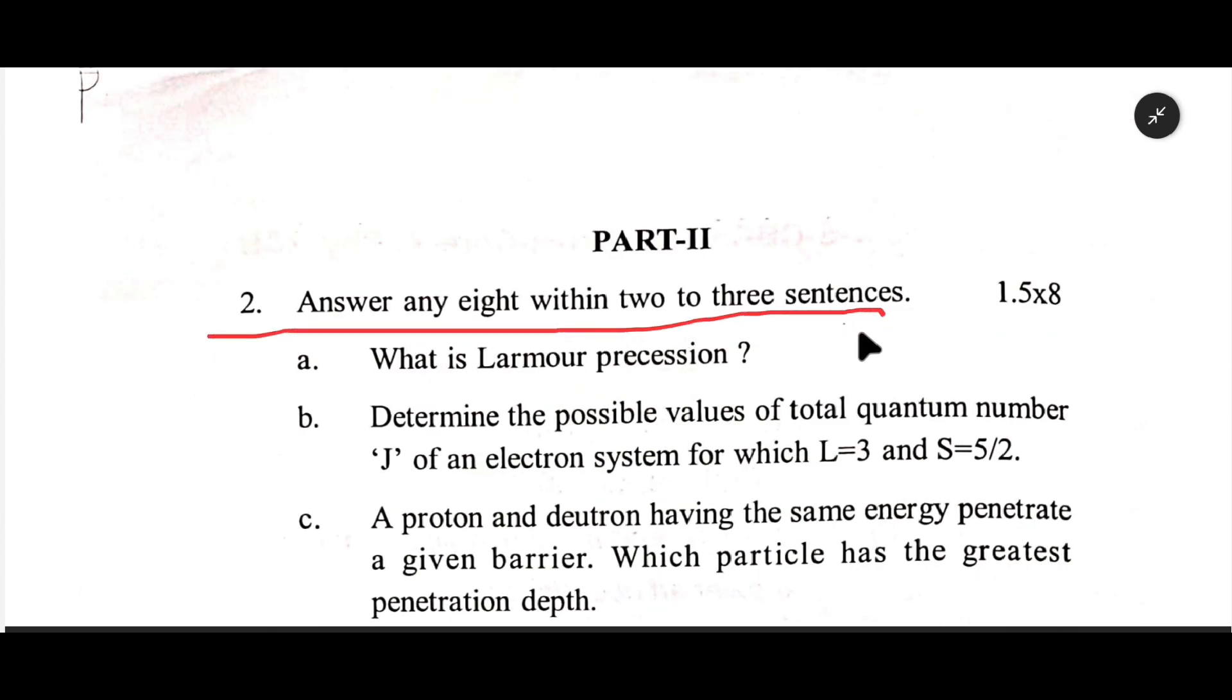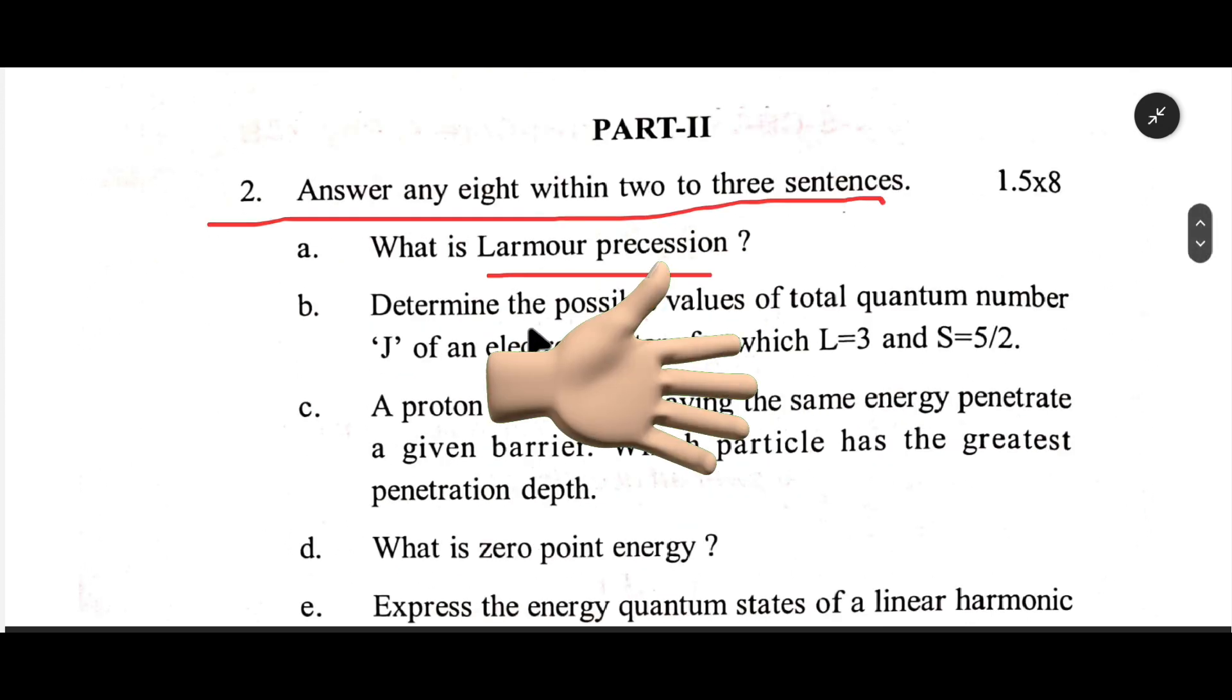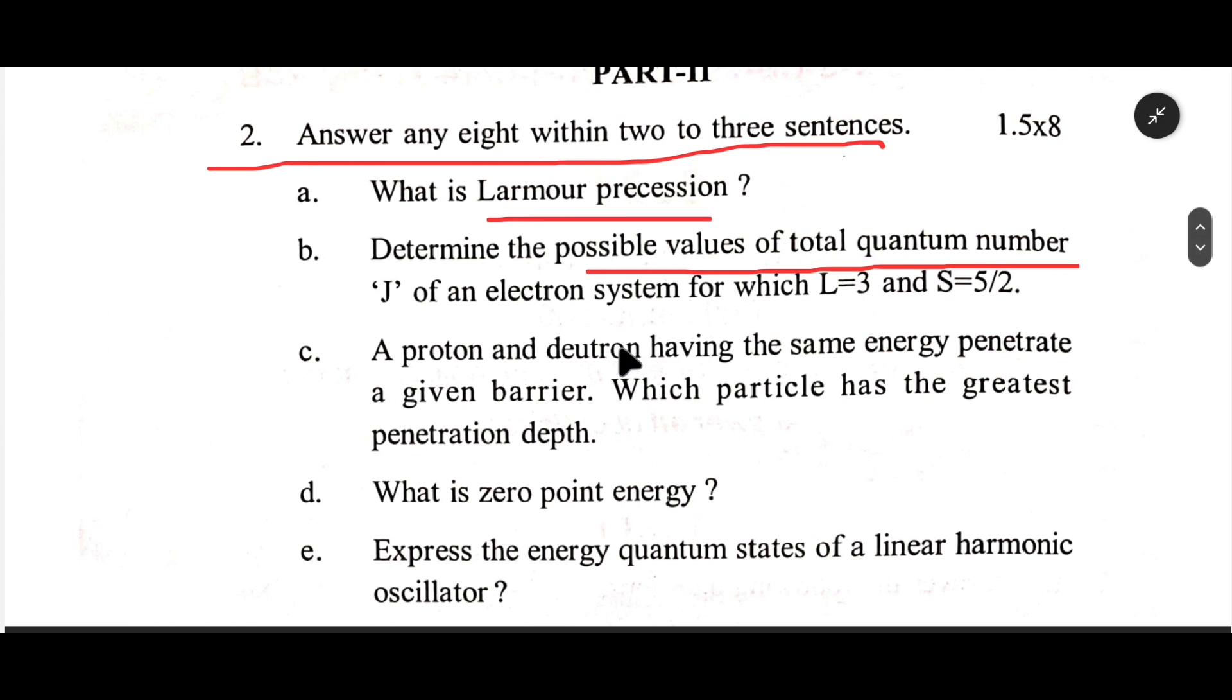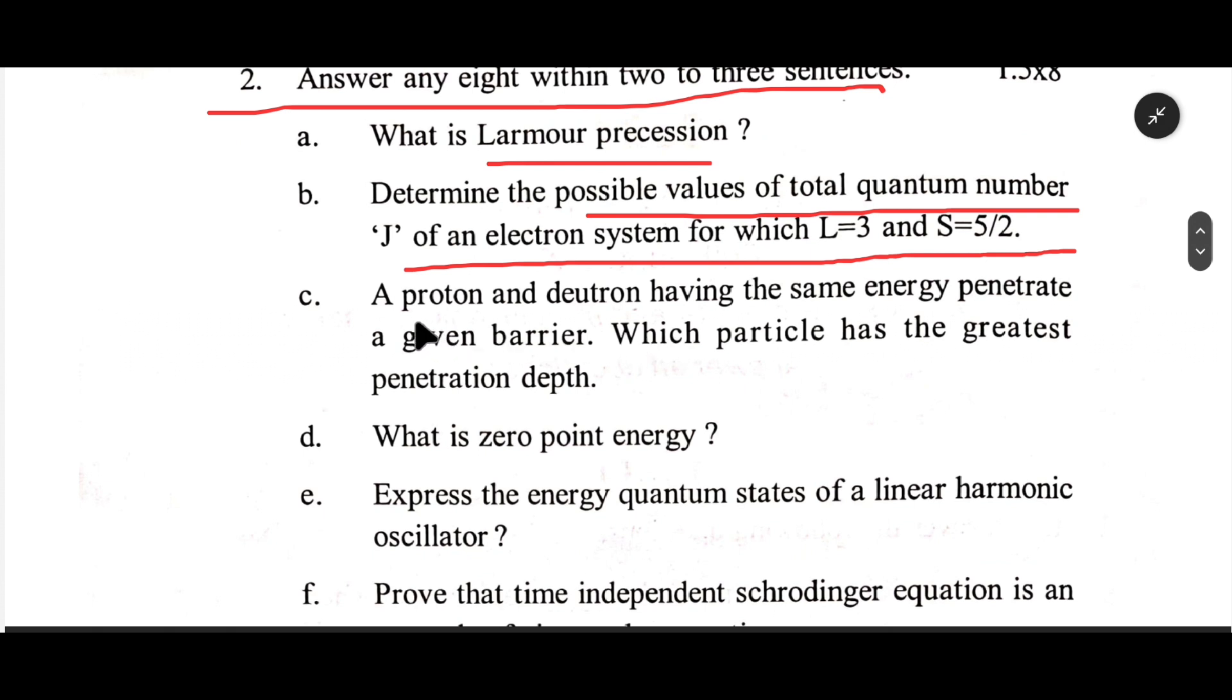Answer any eight within two to three sentences. a. What is Larmor precession? b. Determine the possible values of total quantum number j of an electron system for which l equals three and s equals five halves. c.